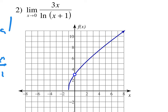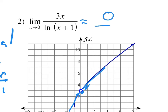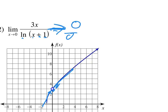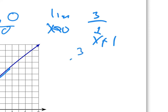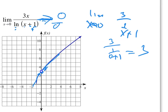Another problem — plugging in 0: 3 times 0 is 0, and natural log of 1 is 0. Approaching 0 over 0, indeterminate. By L'Hôpital, limit as x approaches 0: derivative of 3x is 3, derivative of natural log of x plus 1 is 1 over x plus 1. Plugging in 0: 3 over 1 plus 0 plus 1 equals 3. Answer: 3. L'Hôpital worked.